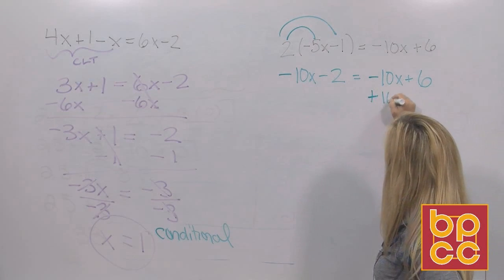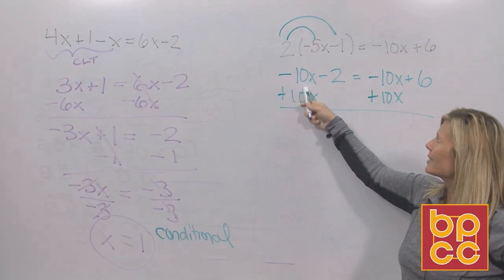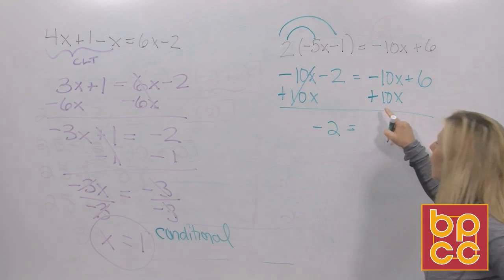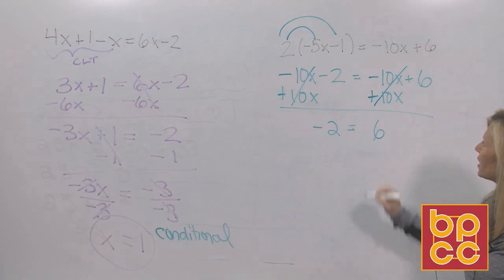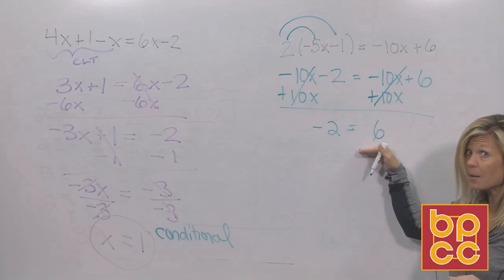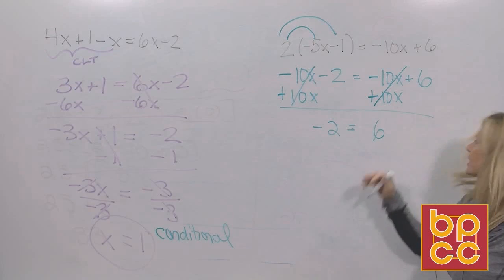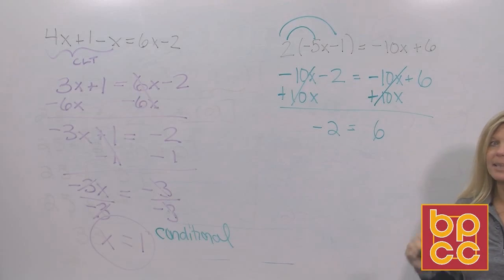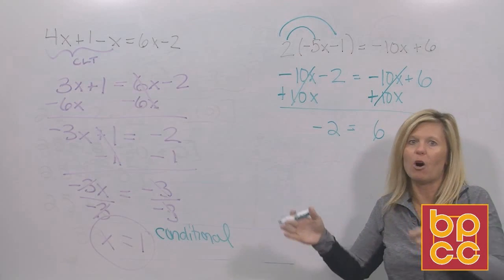Now we move our variable to the left, so we do the opposite of subtract 10x, which is add 10x. When you subtract 10x and add 10x, they're additive inverses — opposites — so they cancel out, leaving negative two. The same happens on the right: subtract 10x and add 10x cancel out, leaving positive six. Now look closely: do you see an x anywhere? No, you do not. This does not say x equals negative two or x equals six — this is just a statement.